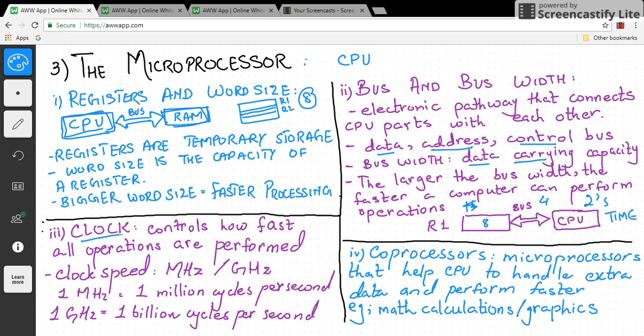The third feature is the clock. The clock controls how fast operations are performed. Clock speed is measured in megahertz or gigahertz. One clock cycle means one task is performed on the computer. 1 megahertz means 1 million cycles per second. 1 gigahertz means 1 billion cycles per second. Within 1 cycle, 1 whole instruction is completed.